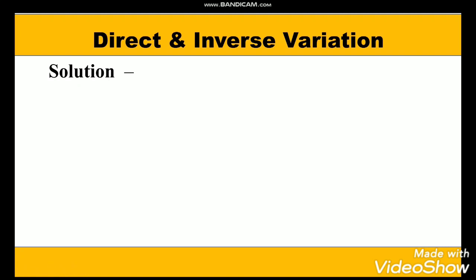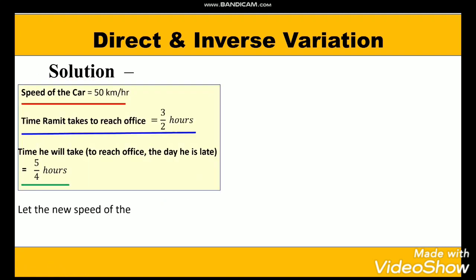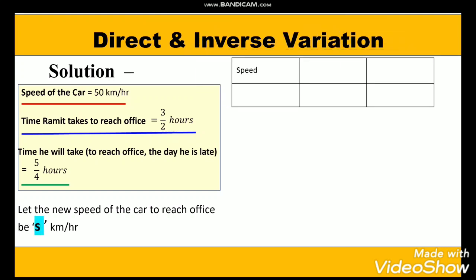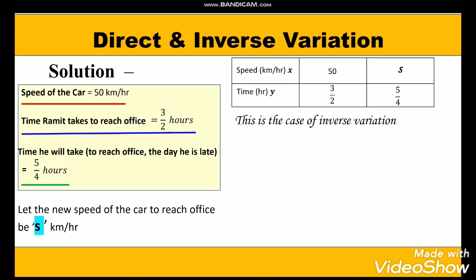Let us assume the speed of the car is s km per hour. We shall make a table showing speed and time, where speed is x and time is y. When the speed is 50 km per hour, the time is 3/2 hours, and when the new speed is s, the time is 5/4 hours. This is a case of inverse variation because more the speed, less the time will be taken to cover the same distance.